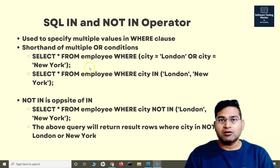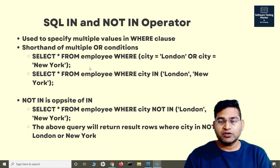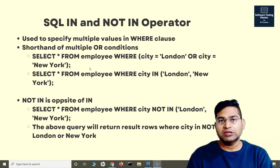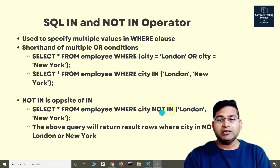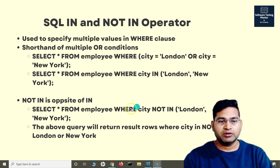NOT IN is exactly the opposite of IN. IN returns the rows that contain the values you specify in the brackets — for example London and New York. NOT IN returns anything apart from those specified values. So if you want rows which are not in London and New York, you simply place NOT in front of IN and specify the values.